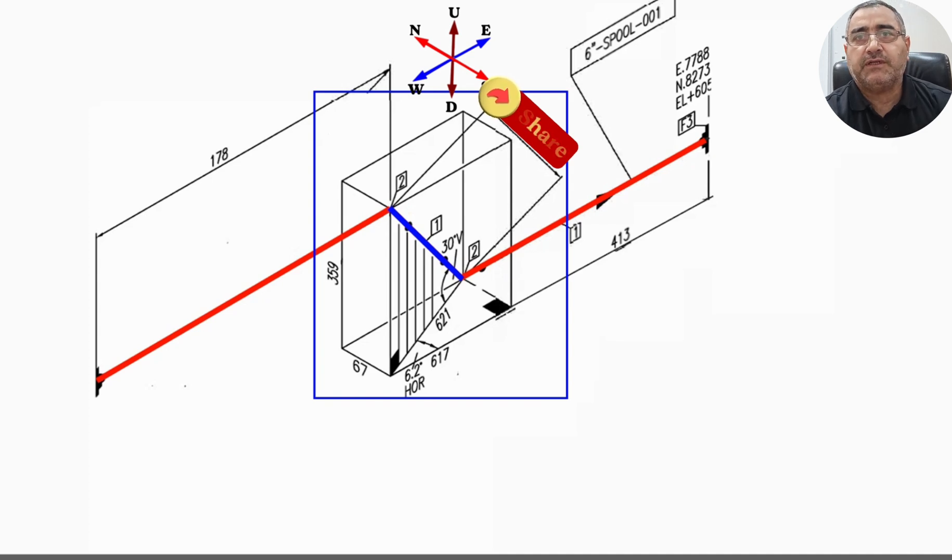To calculate the length of a pipeline that moves in three dimensions—eastward, upward, and northward—we can use the Pythagorean theorem in 3D. Let's mark the length of the pipe section as L. L equals the square root of 359 squared plus 617 squared plus 67 squared. Let's do these calculations step by step using a scientific calculator.